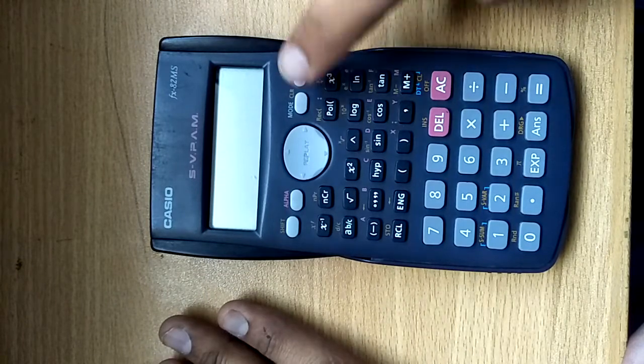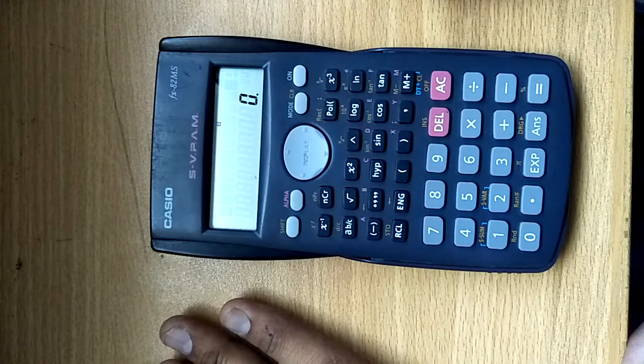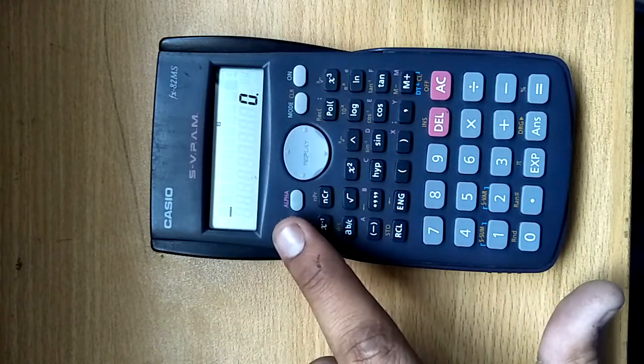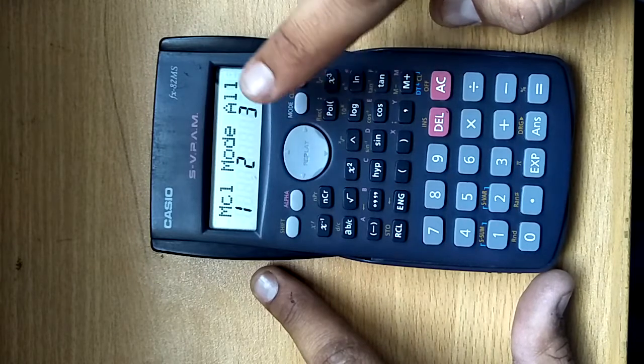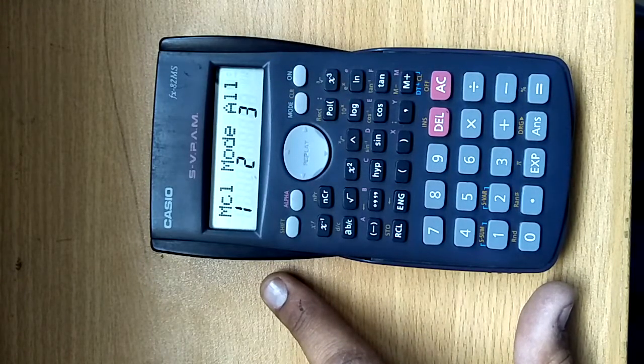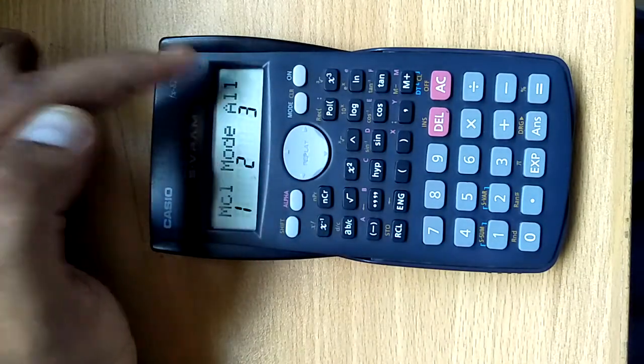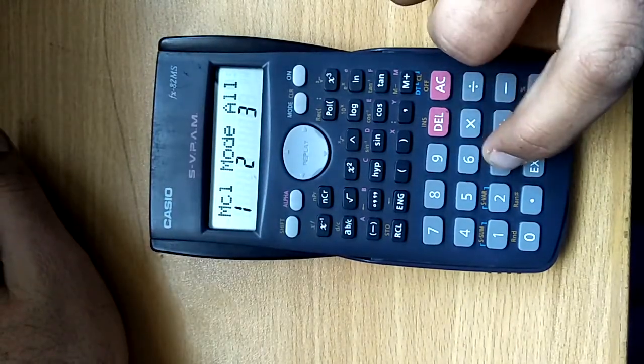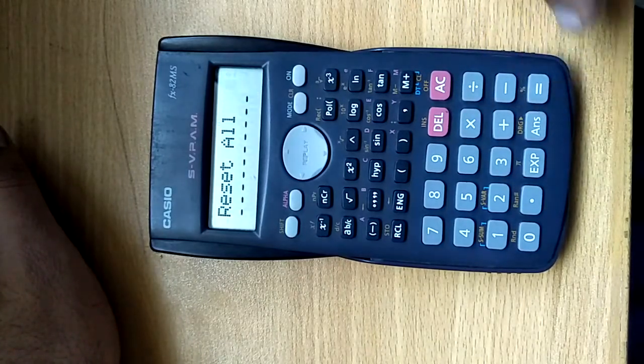Now start your calculator by pressing the ON button, and then first of all press SHIFT and then press MODE. You will get three options. Now you are going to press 3, that is written ALL. So now press 3 and then equals.